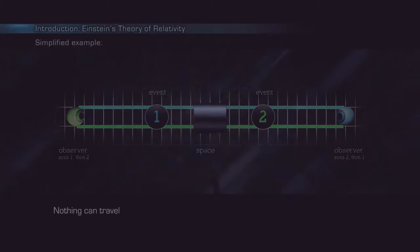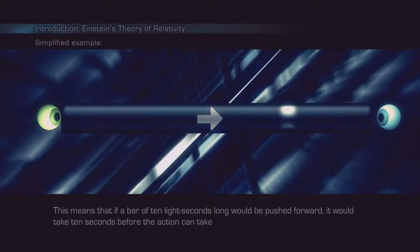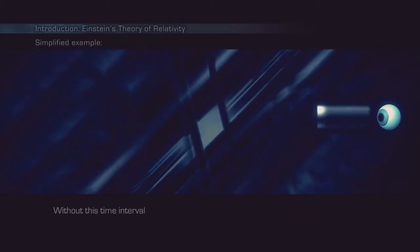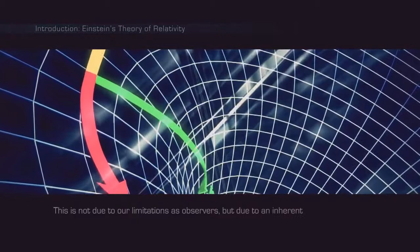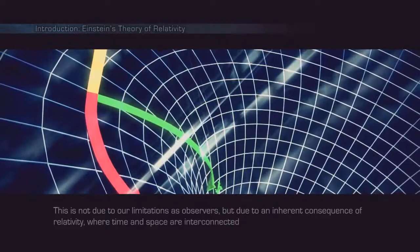Nothing can travel faster than the speed of light. This means that if a bar of 10 light seconds long would be pushed forward, it would take 10 seconds before the action can take place on the other side. Without this time interval of 10 seconds, the bar does not exist in its entirety. This is not due to our limitations as observers, but due to an inherent consequence of relativity, where time and space are interconnected and cannot exist without each other.